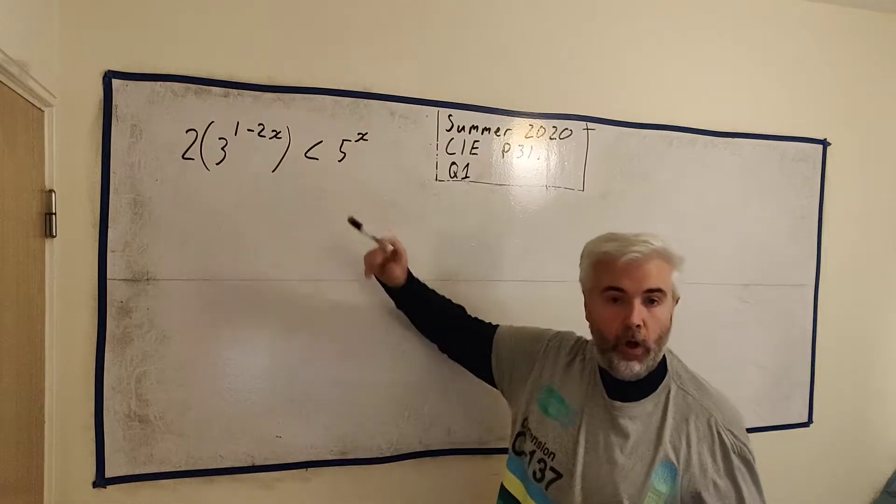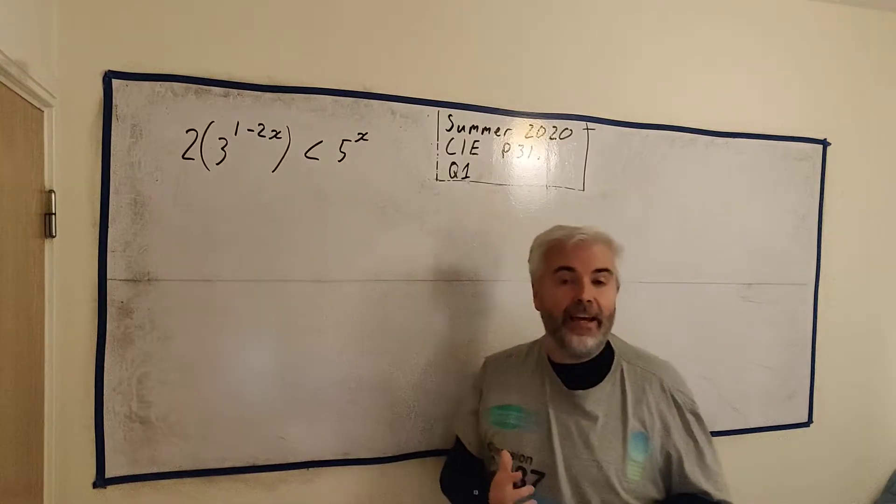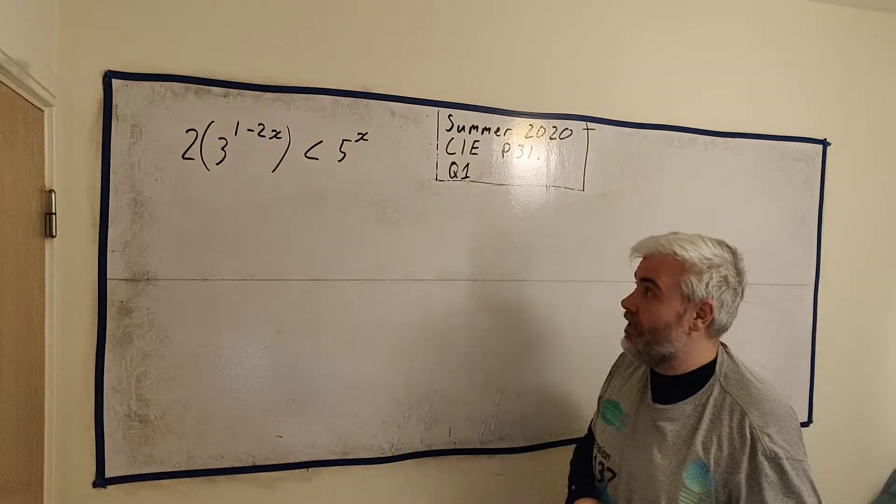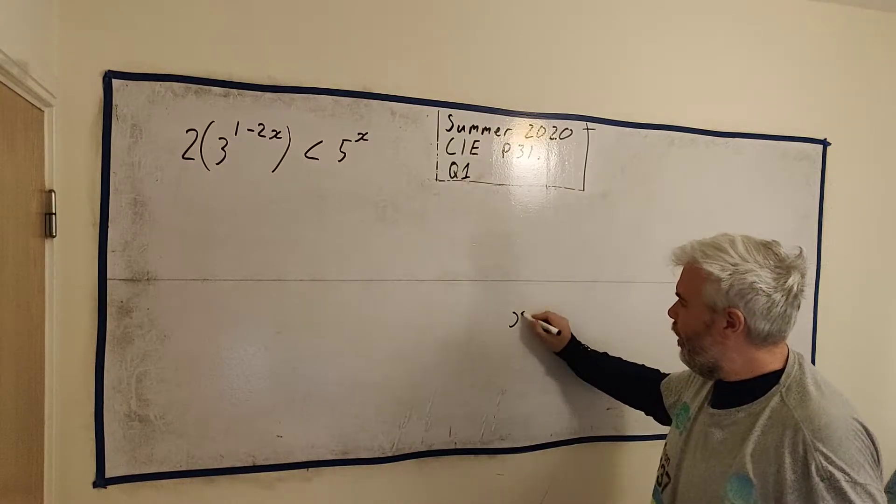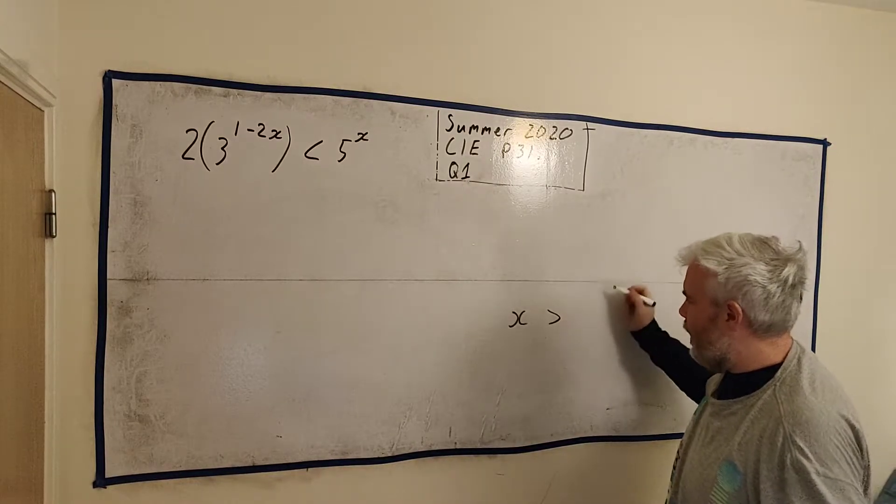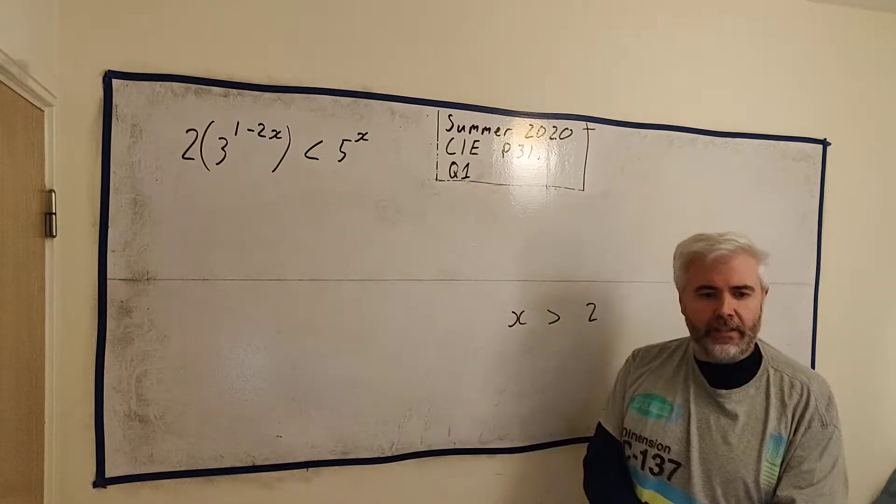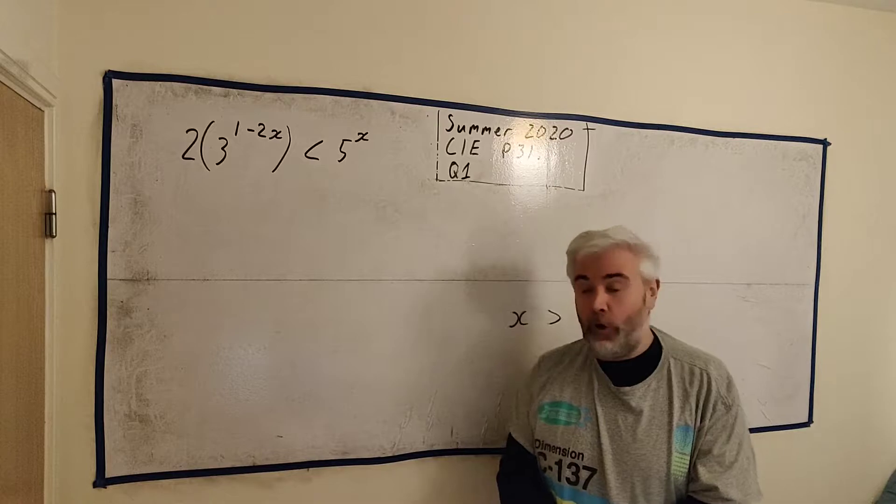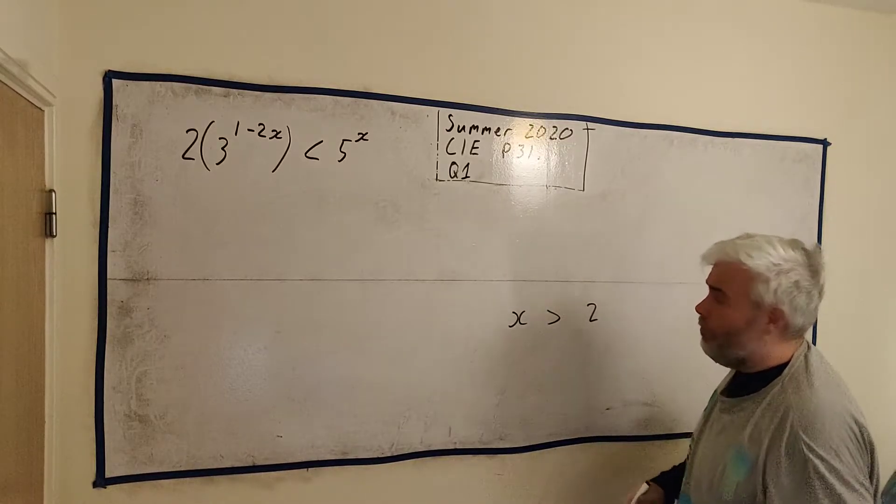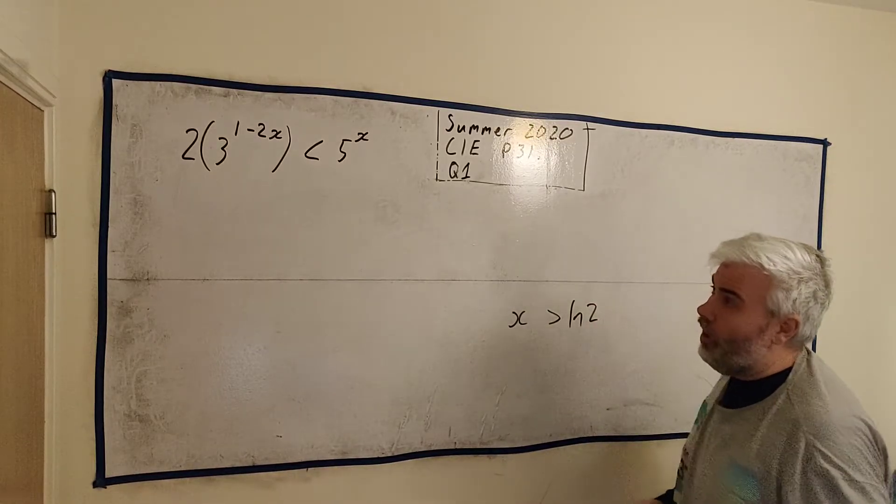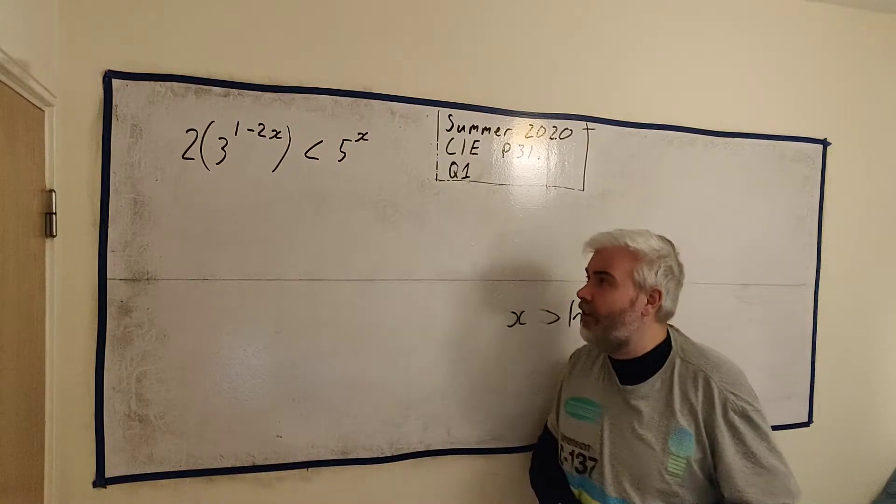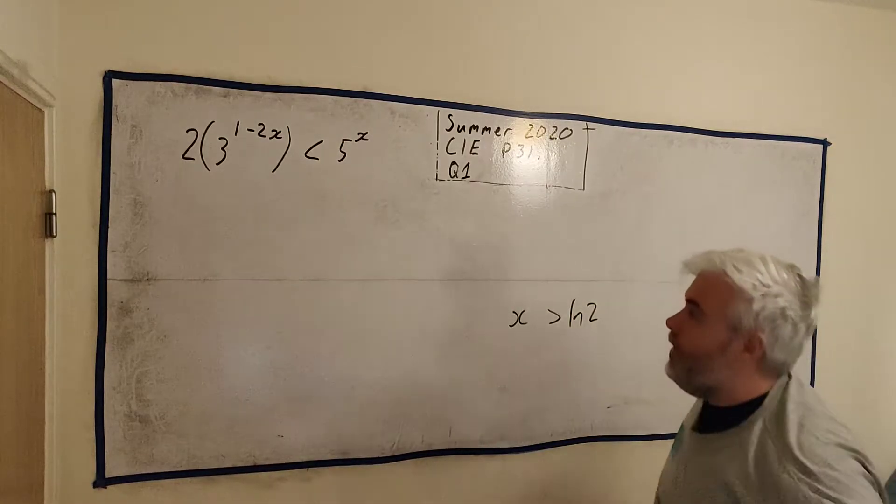This question involves an inequality and they ask us to find a set of values for x that solves this inequality. Basically at the end they often want something like x is greater than 2. They tell us to give our answer in simplified exact form. So it's not going to be 2, spoiler, it's going to have natural logs. Actually any logs you want now that I think about it.